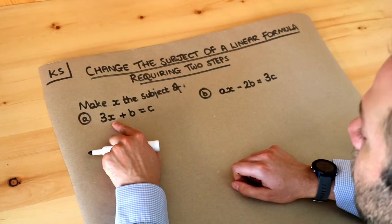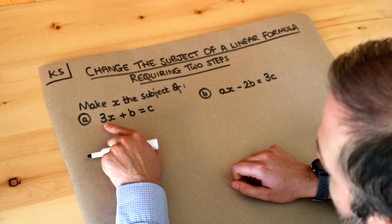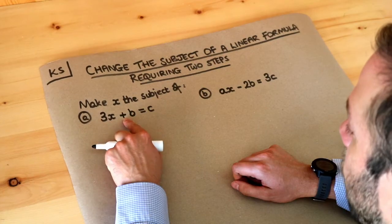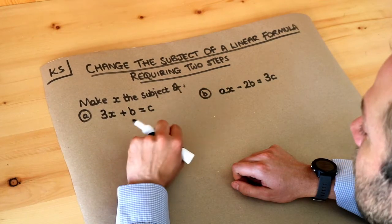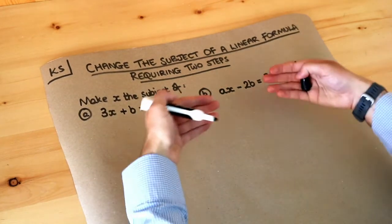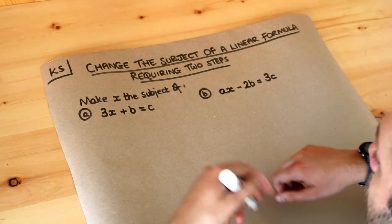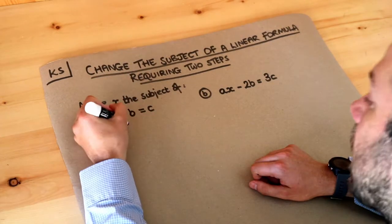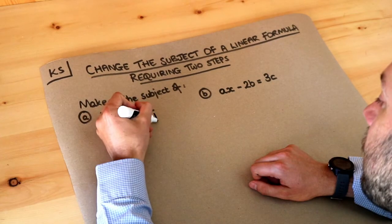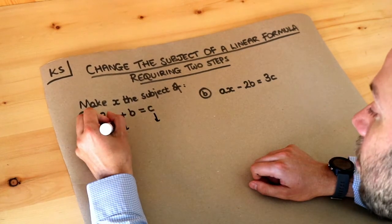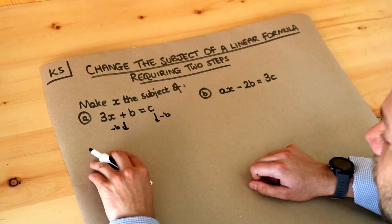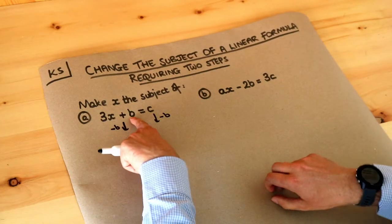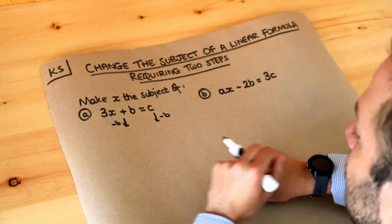So let's think about what's happening to x. x is being multiplied by 3 because 3x means 3 times x. Then we're adding b to it and that gives c. What we should do is work backwards. So the last thing we did here was to add b, so to get rid of that plus b we subtract b from both sides of the equation. On the left hand side the minus b and the plus b are opposites of each other so they cancel each other out.